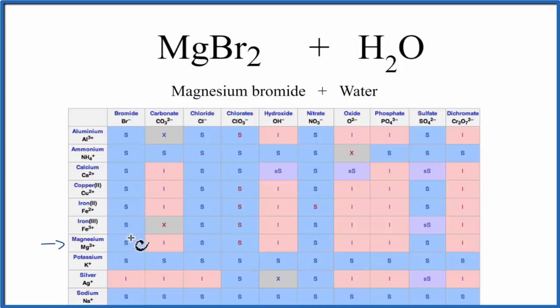So we go Br minus, and we go down. This is where they meet. There's an S. So it is soluble in water. When we put in water, it'll dissolve.